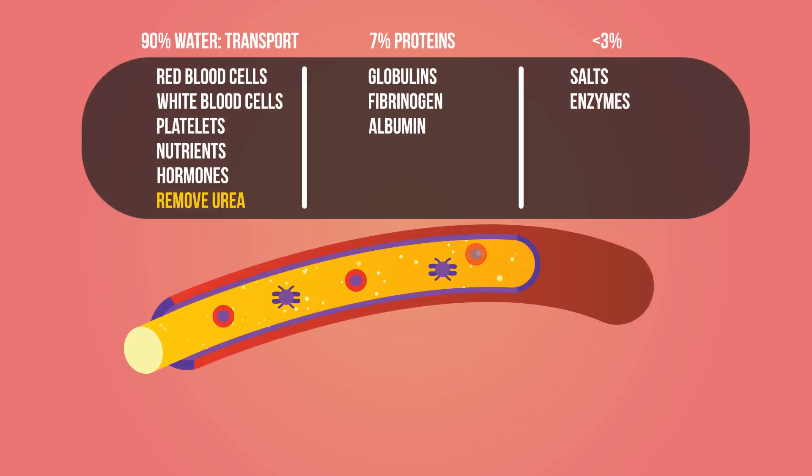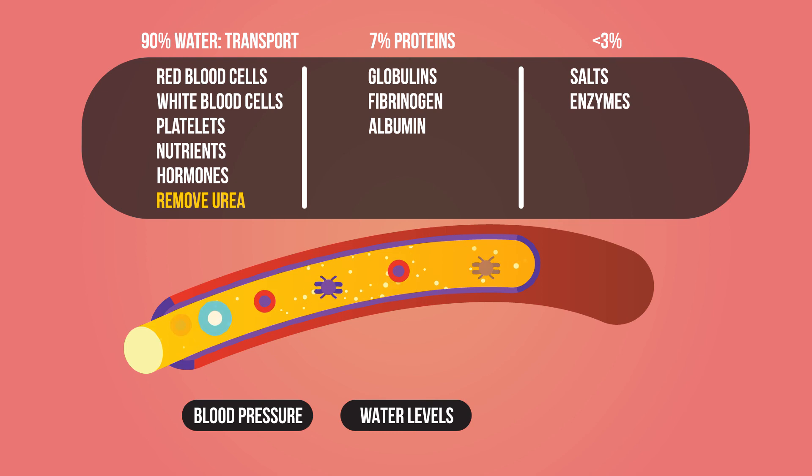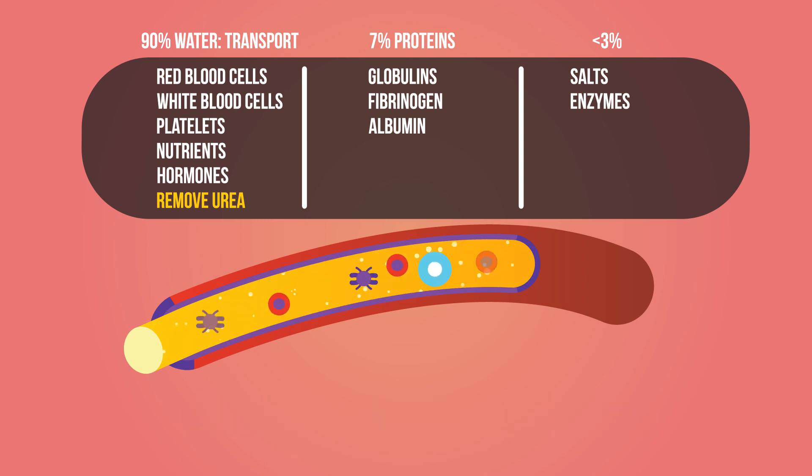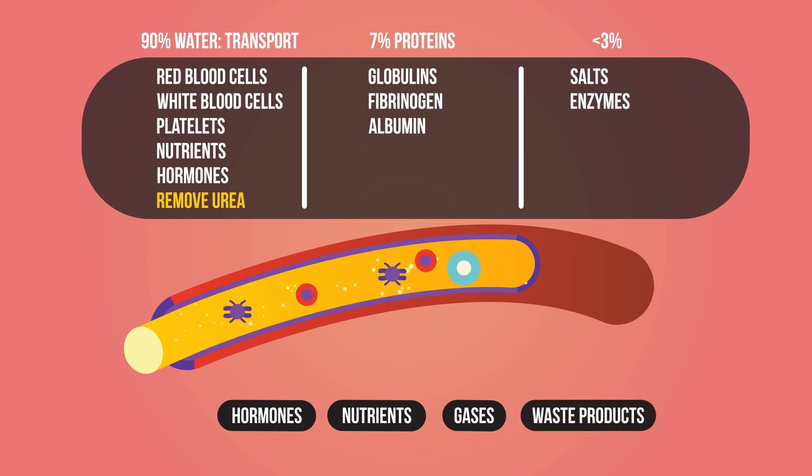So to summarize, plasma has a range of roles including maintaining blood pressure, water levels and body temperature. It has a major role in transporting many substances around the body including hormones, nutrients, gases, waste products, and proteins such as antibodies and enzymes.